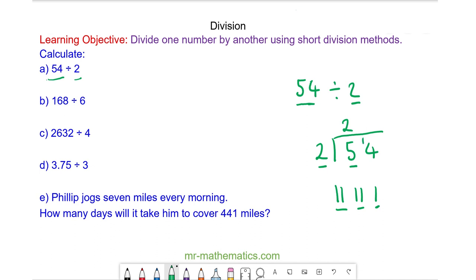So now we have 2s into 14 and you can see we have 7 2s. So 54 divided by 2 is 27.